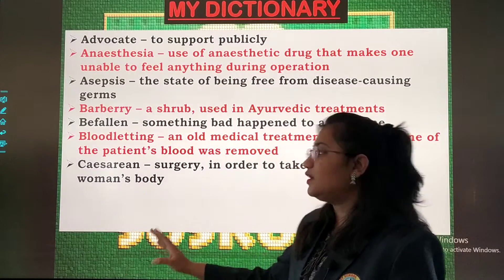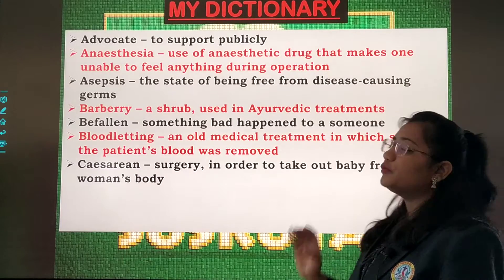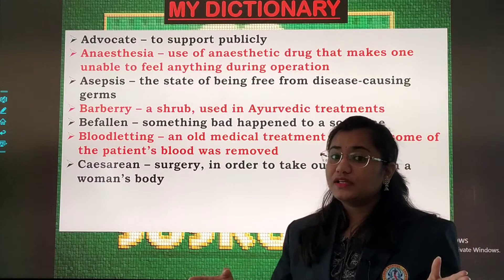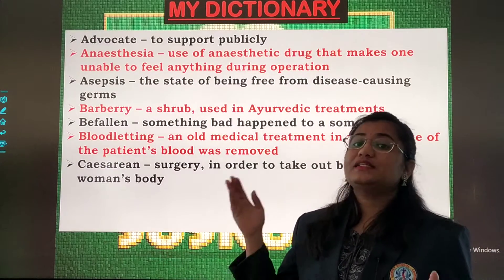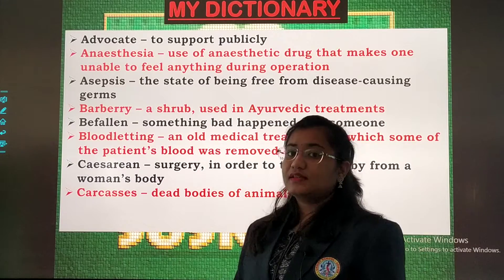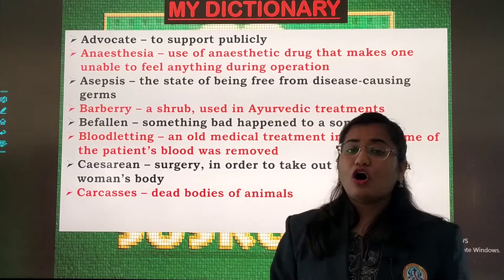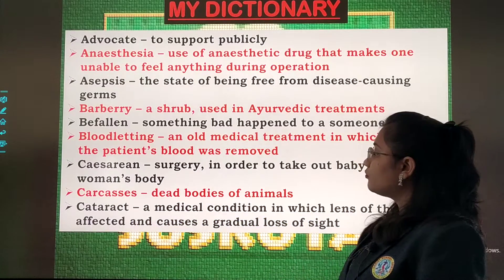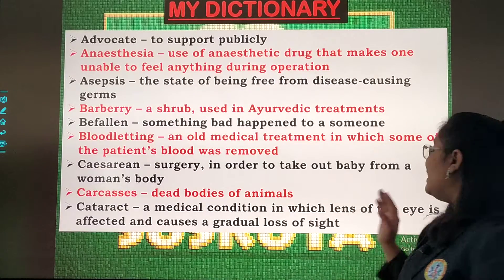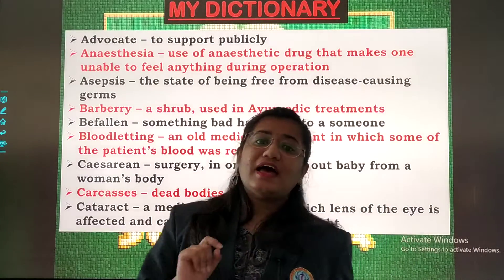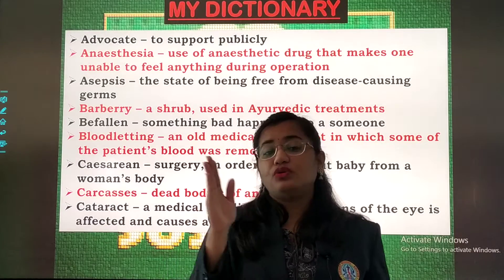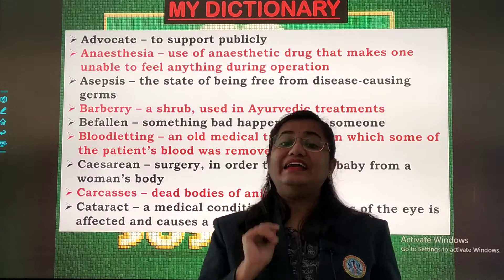Caesarean means surgery in order to take out a baby from a woman's body. It is a kind of delivery jahan se ek woman ke body se baby ko nikala jaata hai — it is a type of surgery. Carcass means dead bodies of animals. Cataract means a medical condition in which the lens of the eye is affected and it causes gradual loss of sight — dhire dhire nazar kamzor ho jaati hai. It is a type of an eye defect.